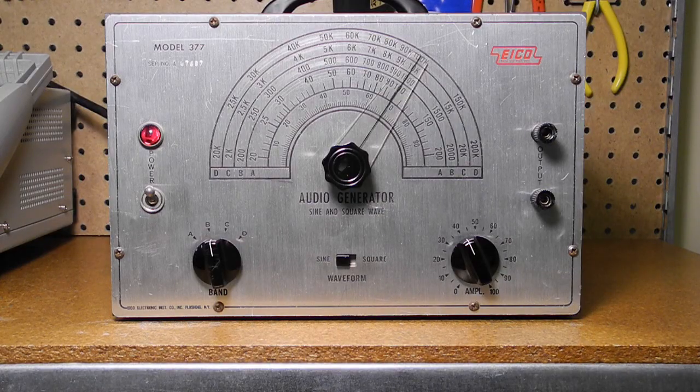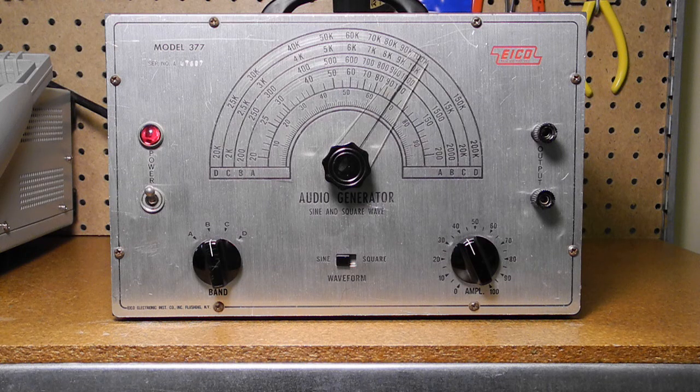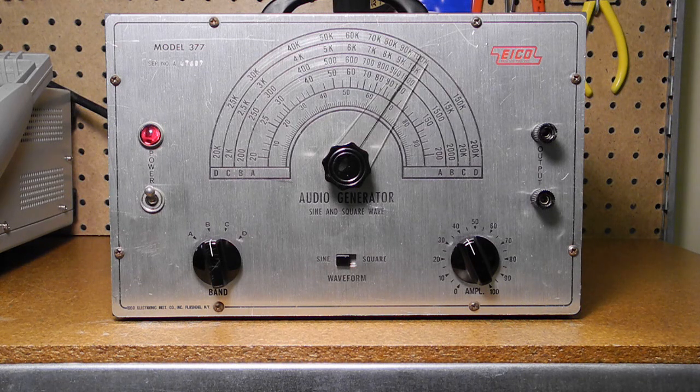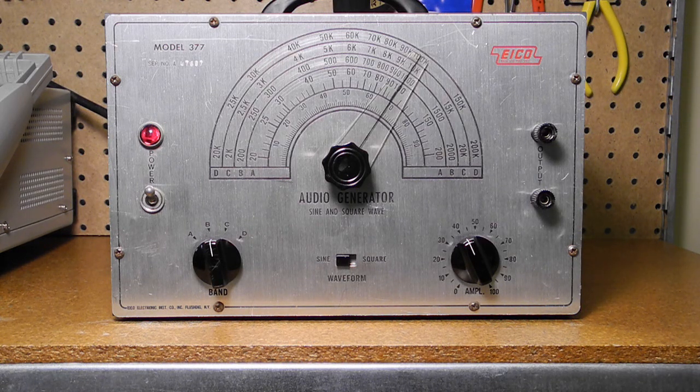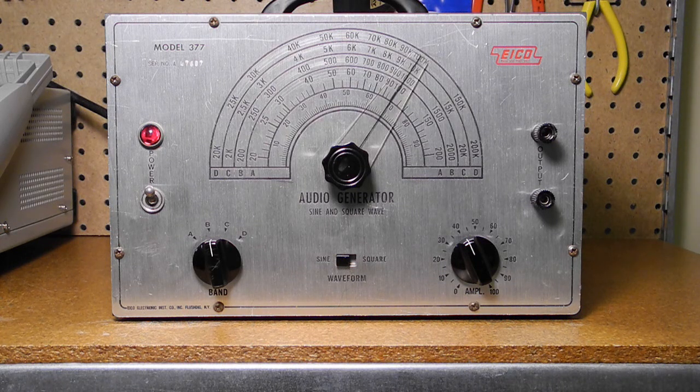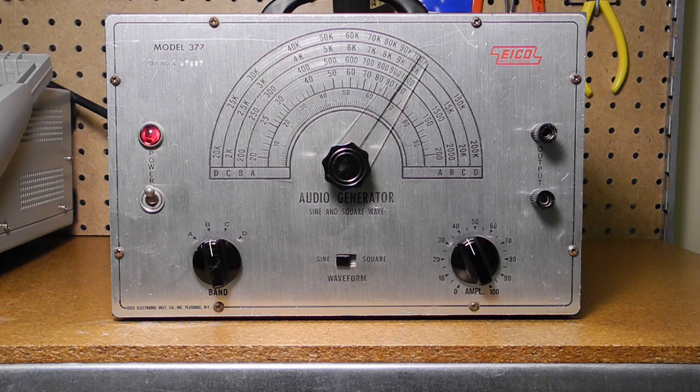An audio generator is a piece of test equipment that produces electronic waveforms at audio frequencies, roughly speaking from 20 to 20,000 Hz, or cycles per second. Depending on the unit, they can produce various types of waveforms, the most common being sine and square waves. They find use in testing and troubleshooting of various types of electronic equipment, including radio and audio amplifiers.